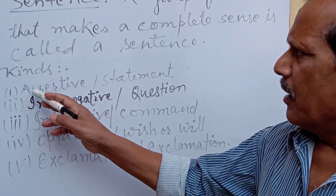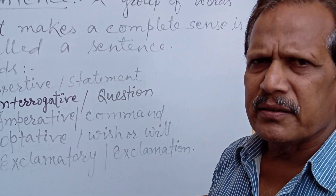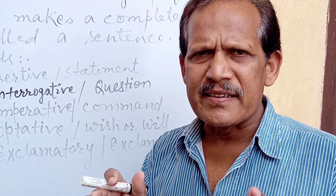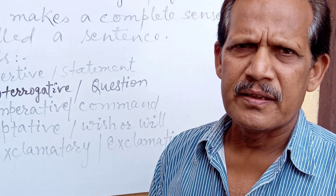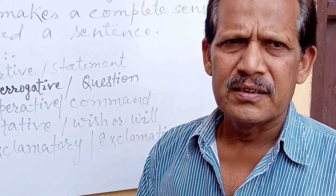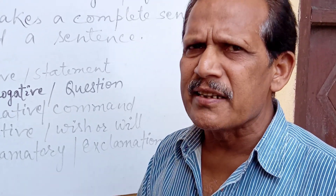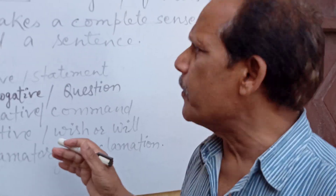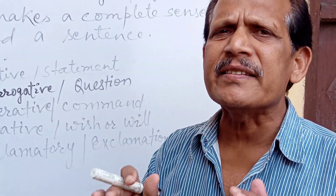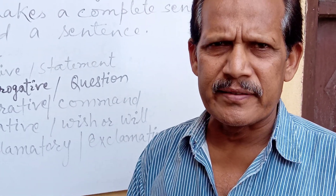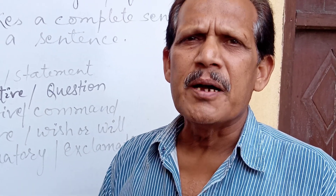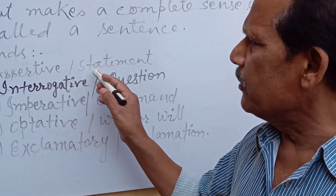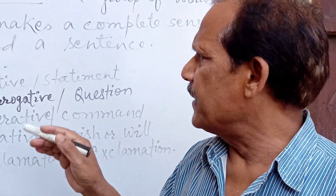The first is the assertive sentence — also called a statement sentence. A sentence that stands for a statement. A statement means something told about someone — it may be about myself, about yourself, or about some others. A sentence that begins with a capital letter, ends with a full stop, and makes a complete sense is a statement.